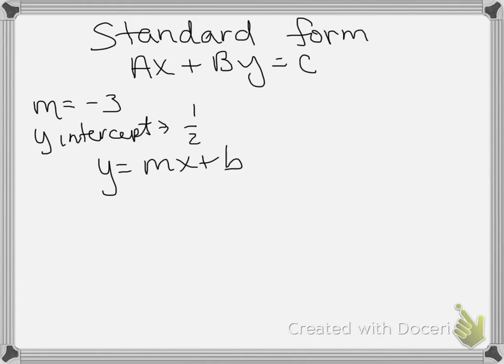All right, so I've already wrote out, we want to put it in standard form, which means we want Ax plus By, that's on one side of the equal sign, and then we want C on the other, which is just going to be the number with no variable on it.